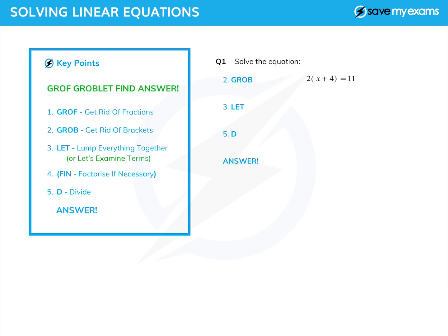What does GROFF GROBLET FIND ANSWER stand for? Well, very straightforwardly: Get Rid Of Fractions, Get Rid Of Brackets, Lump Everything Together which is putting all the terms with x on one side and all the terms without x on the other, Factorize If Necessary (now that shouldn't be necessary in linear equations, which is why it's in brackets, but it's there for completeness), and then D for Divide.